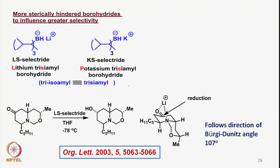We now look at even stronger reducing agents where even more steric hindrance has been introduced. For example, these are called LS-selectride and KS-selectride. L stands for lithium and S stands for the triisomyl part, from which the S letter has been taken. The groups attached are bulkier than secondary butyl — specifically the triisomyl group.